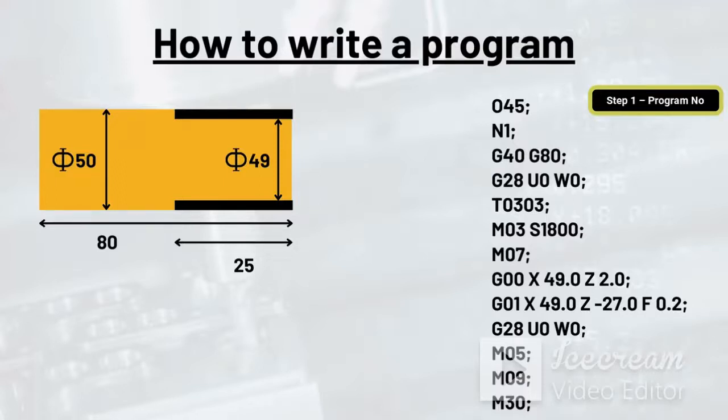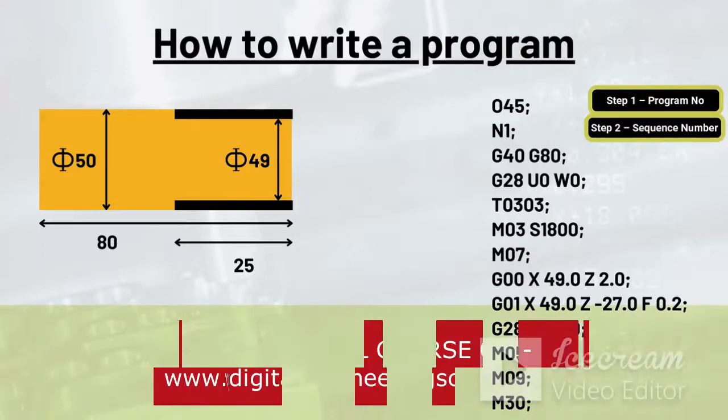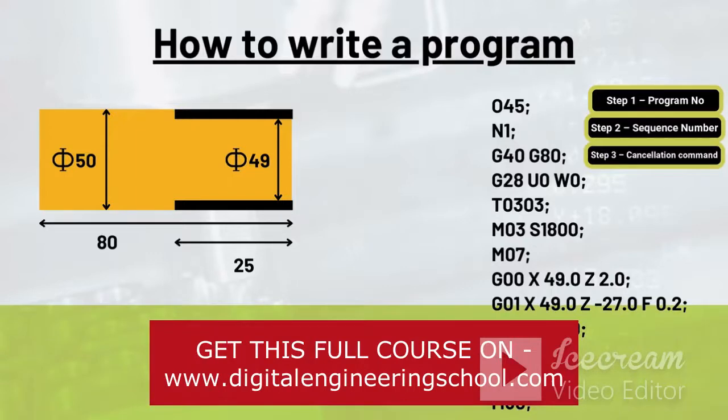The next step is providing the sequence number. In this step we provide sequence number to the program. If for one particular operation we need different tools, we need a sequence for the same. Let's say N1 is the sequence for one sequence.